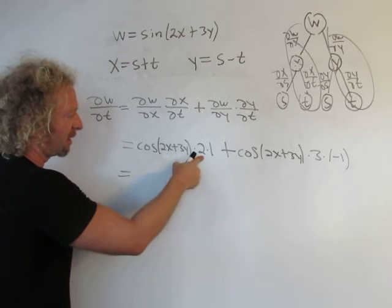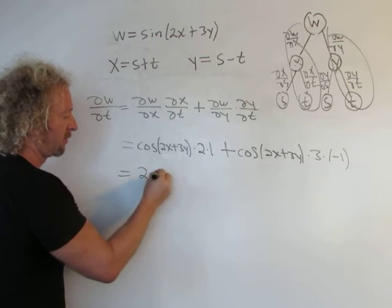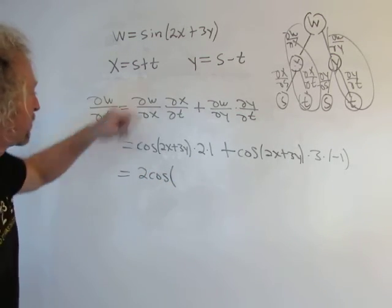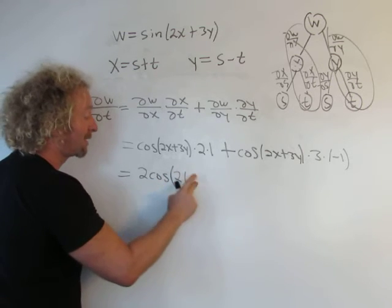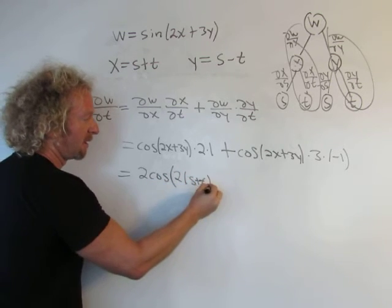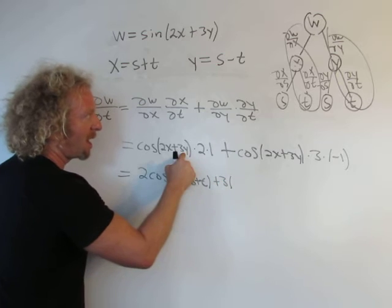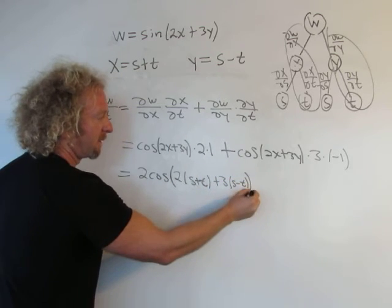So let's clean all this up. Let's put the 2 in the front. Let's see. x is s plus t. So we get 2x, s plus t. Plus 3. And then y is s minus t. Okay.